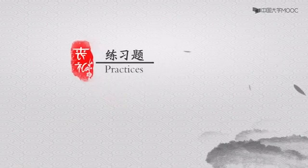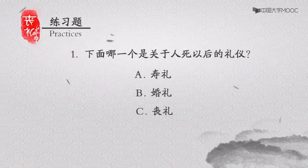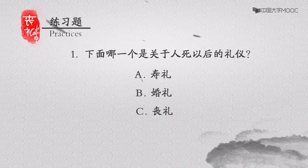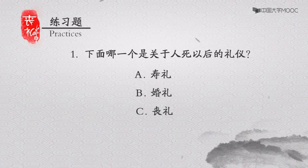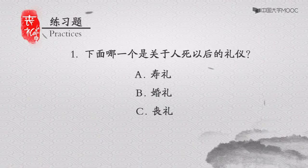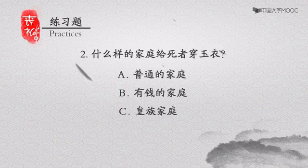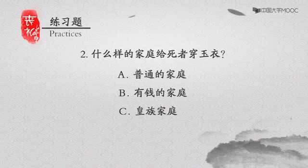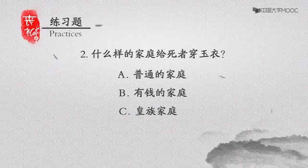下面我们一起来做几个小练习。第一题：下面哪一个是关于人死以后的礼仪？A. 寿礼，B. 婚礼，C. 丧礼。正确答案是C。第二题：什么样的家庭给死者穿玉衣？A. 普通的家庭，B. 有钱的家庭，C. 皇族家庭。正确答案是C。